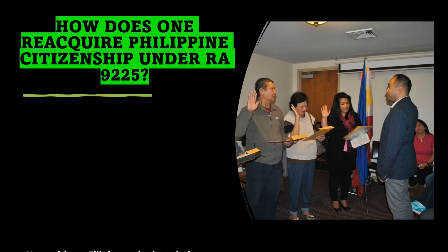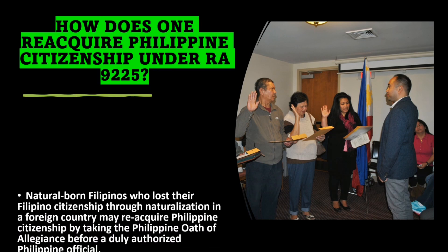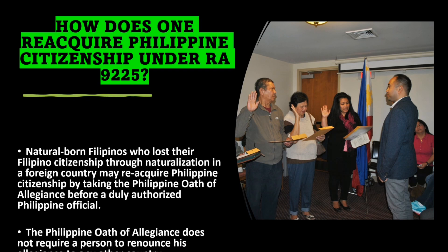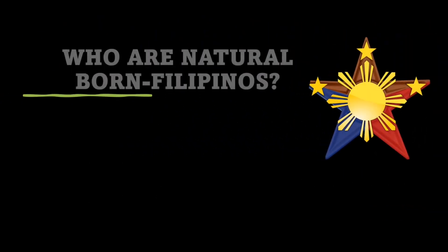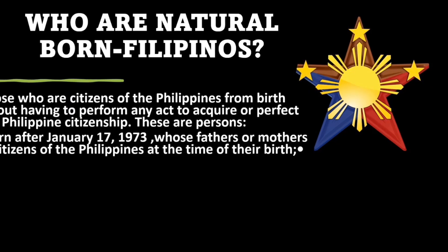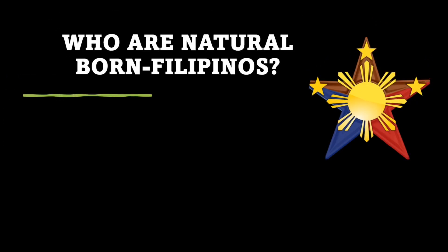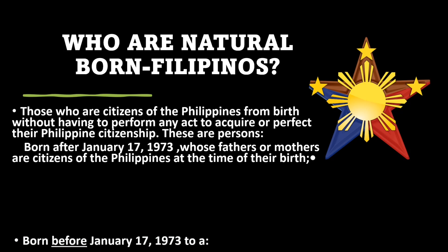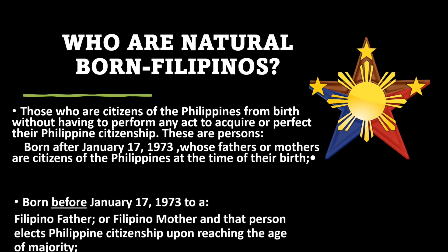How does one reacquire Philippine citizenship under RA 9225? Natural-born Filipinos who lost their Filipino citizenship through naturalization in a foreign country may reacquire Philippine citizenship by taking the Philippine Oath of Allegiance before a duly authorized Philippine official. The Philippine Oath of Allegiance does not require a person to renounce allegiance to any other country. Natural-born Filipinos are those who are citizens from birth — persons born after January 17, 1973 whose fathers or mothers are citizens of the Philippines, or those born before January 17, 1973 to a Filipino father or mother who elected Philippine citizenship upon reaching the age of majority, which is 18.